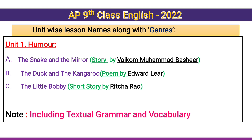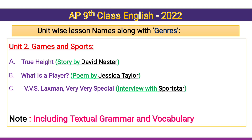Unit 1: Humor. Reading A — 'The Snake and the Mirror,' a story written by Vaikom Muhammad Bashir. Reading B — 'The Duck and the Kangaroo,' a poem written by Edward Lear. Reading C — 'The Little Bobby,' a short story written by Risha Rao. Including textual grammar and vocabulary.